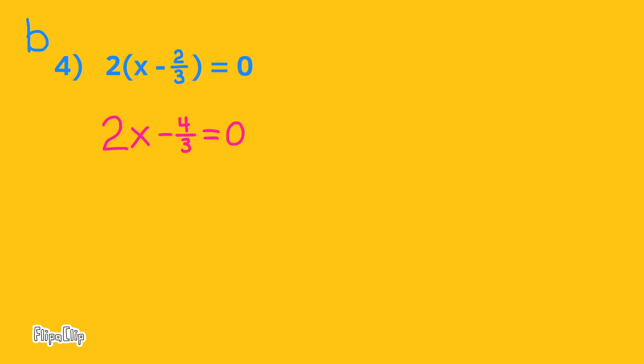Add 4 thirds to both sides of the equal sign, and you'll have 2x equals 4 thirds. To get the x by itself, we'll have to divide by 2.